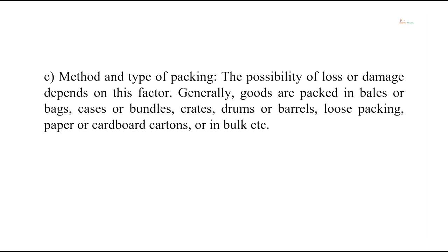Another important detail in the form is the method and type of packing. The possibility of loss or damage depends on what care has been taken by the insured. Generally goods are packed in bales or bags, cases, bundles, crates, drums or barrels, loose packing, paper or cardboard cartons, or in bulk. This should be clearly mentioned in the form, as it helps the underwriter determine whether to enter into an insurance contract.